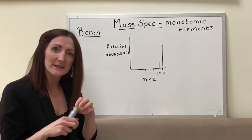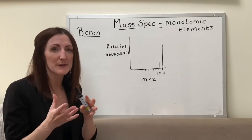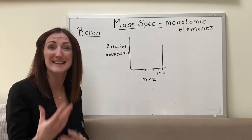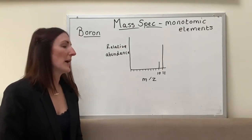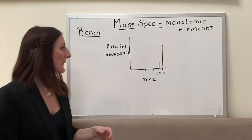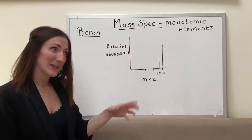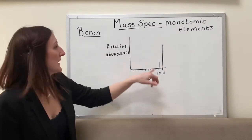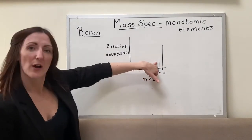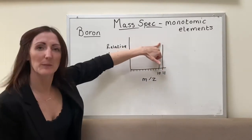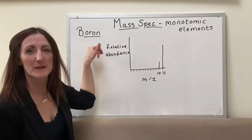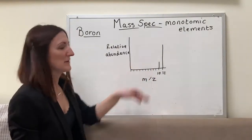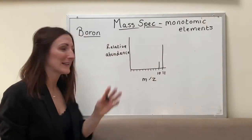It could get doubly ionized and end up with a charge of 2 plus but we're not going to worry about that for now, but it is a good way that the exam boards can extend you with that knowledge. So what we've got here then is our relative abundance and our mass to charge ratio. This is telling me that so much of my sample weighs 10 and so much of my sample weighs 11. I'm going to add on the relative abundance on here because obviously I haven't bothered with the scale up the y-axis.